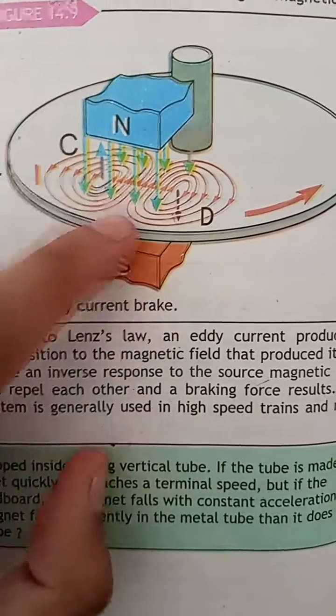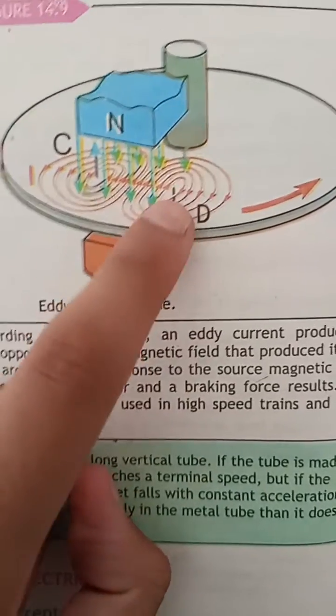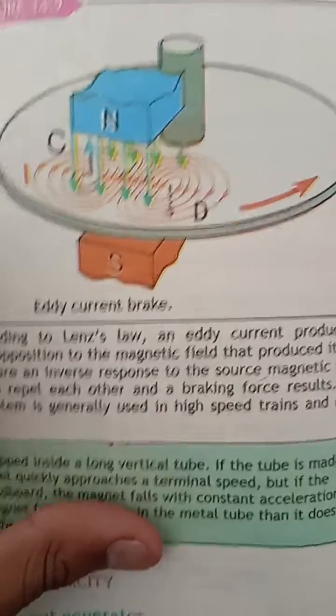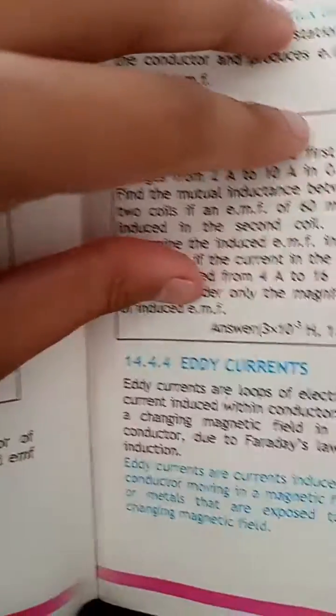Let's read about Eddy Currents. Eddy Currents have a loop circle in a certain form that is produced. We can see what Eddy Currents are.